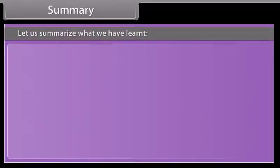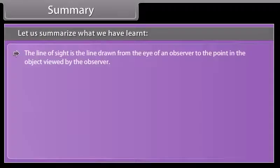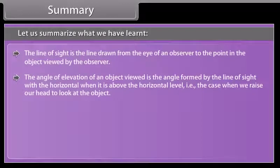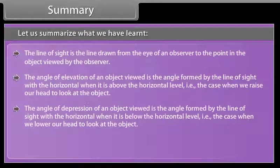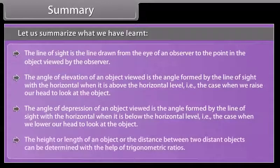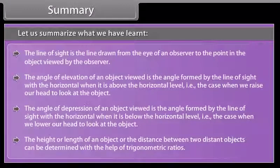Let us summarize what we have learnt. The line of sight is the line drawn from the eye of an observer to the point in the object viewed by the observer. The angle of elevation of an object viewed is the angle formed by the line of sight with the horizontal when it is above the horizontal level — that is the case when we raise our head to look at the object. The angle of depression of an object viewed is the angle formed by the line of sight with the horizontal when it is below the horizontal level — that is the case when we lower our head to look at the object. The height or length of an object or the distance between two distant objects can be determined with the help of trigonometric ratios.